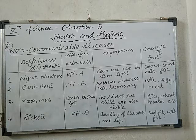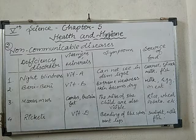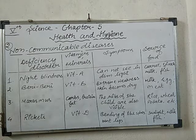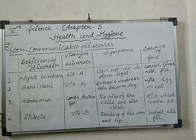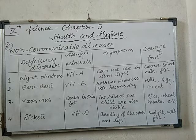Similarly, many minerals are important. A lack of iodine in our body causes goiter. Goiter is a disease in which a person suffers from swelling of the thyroid gland, which is present near the neck region. To get rid of goiter, we need to intake iodine-rich foods such as fish, seafood, and iodized salt.